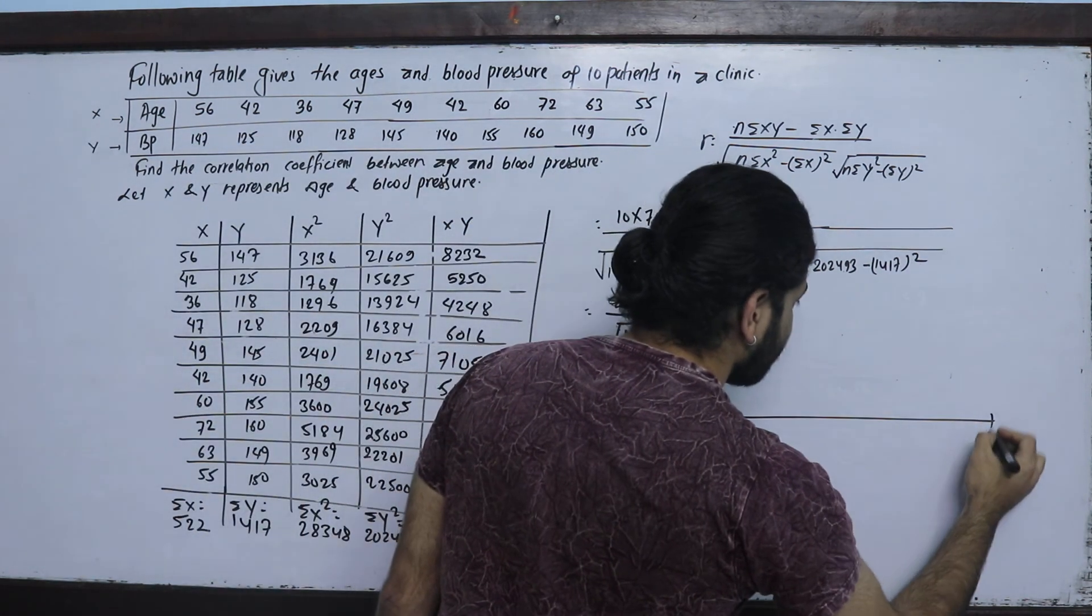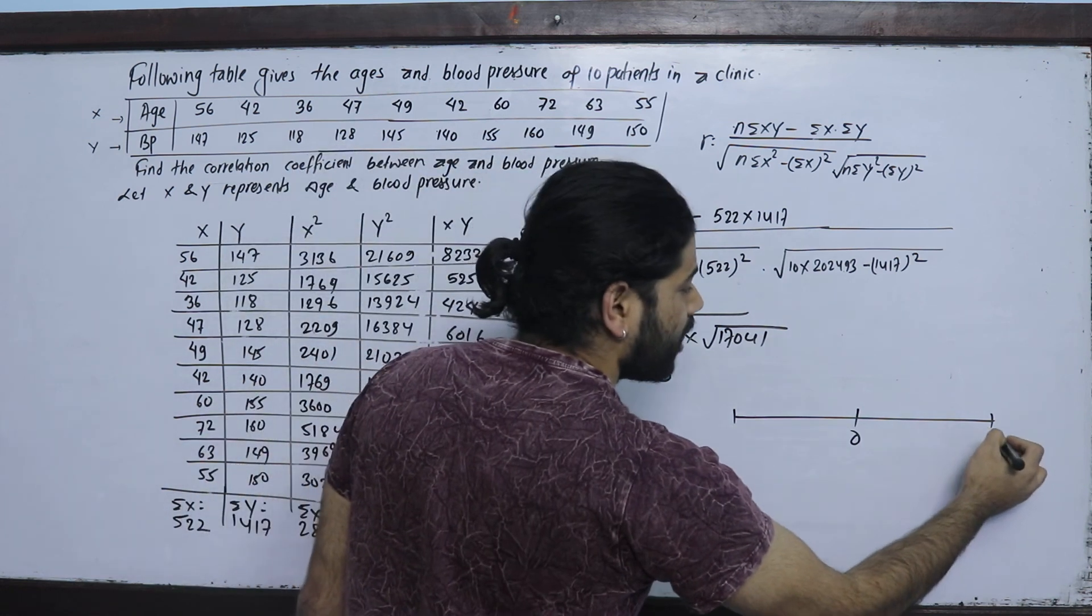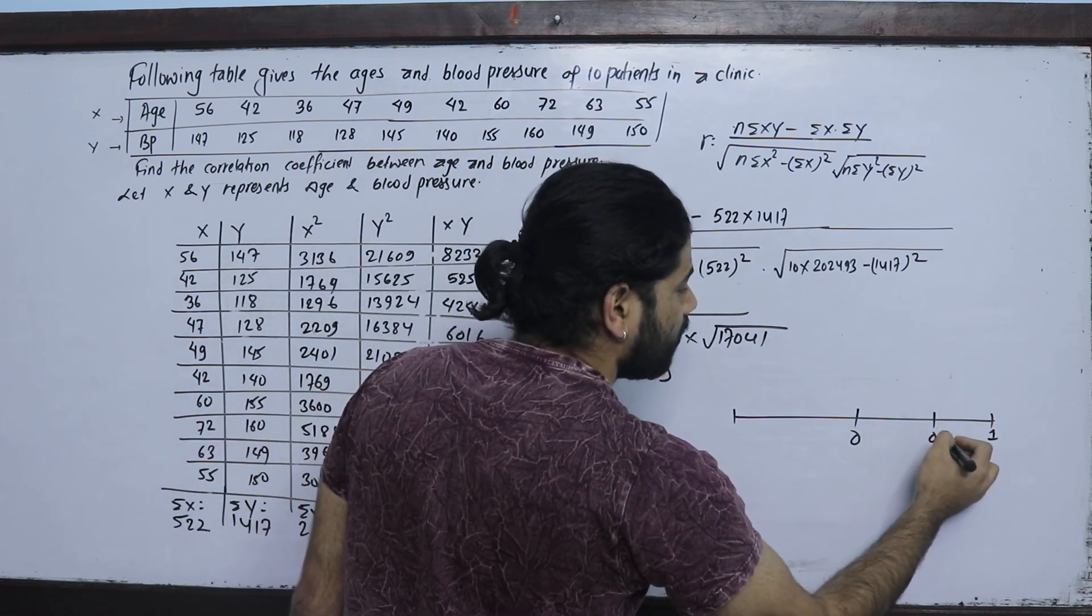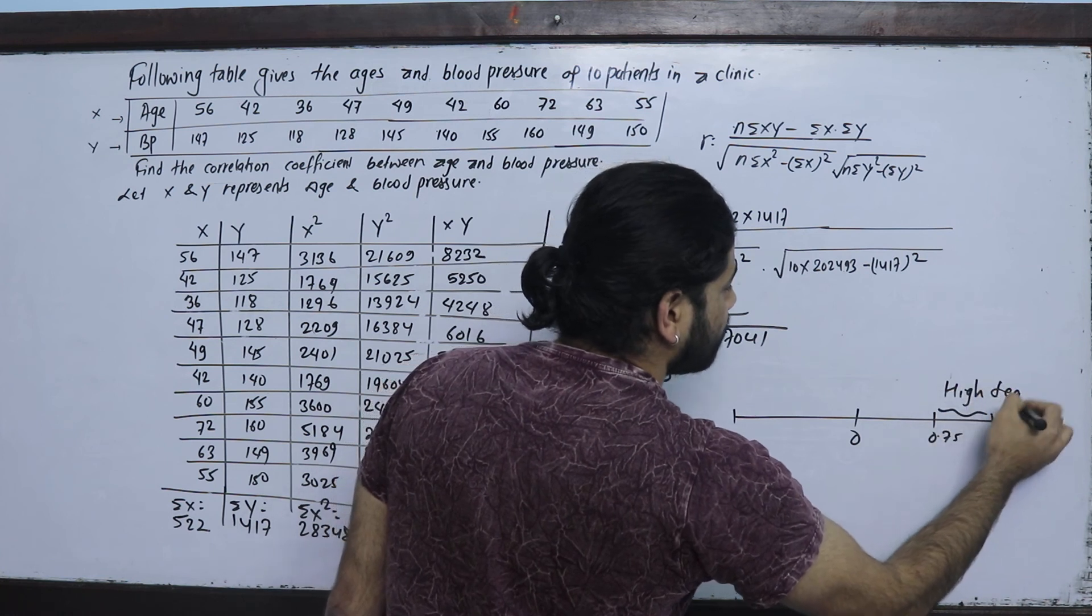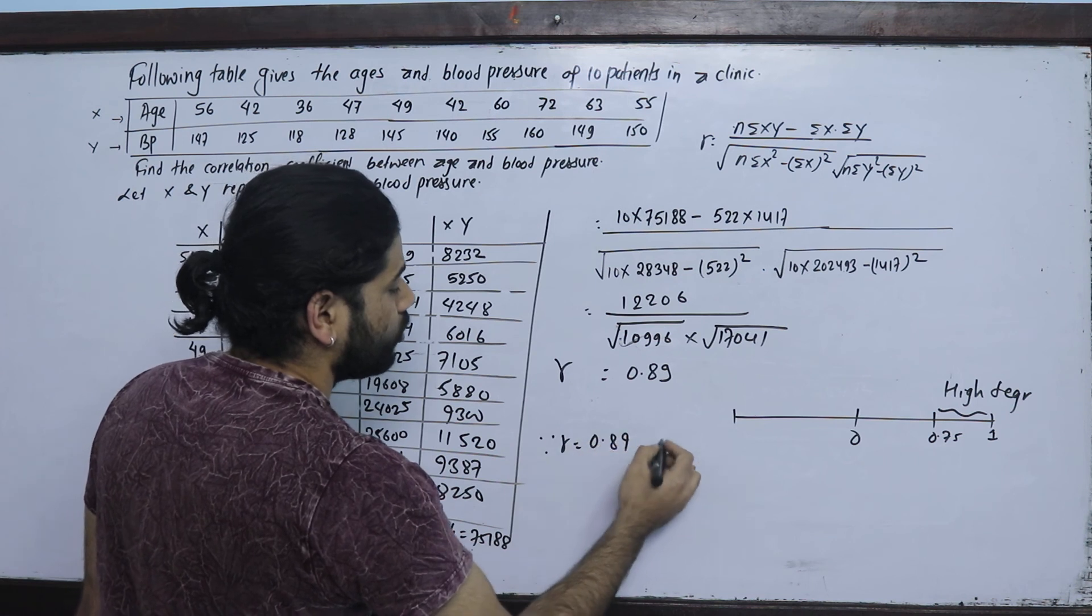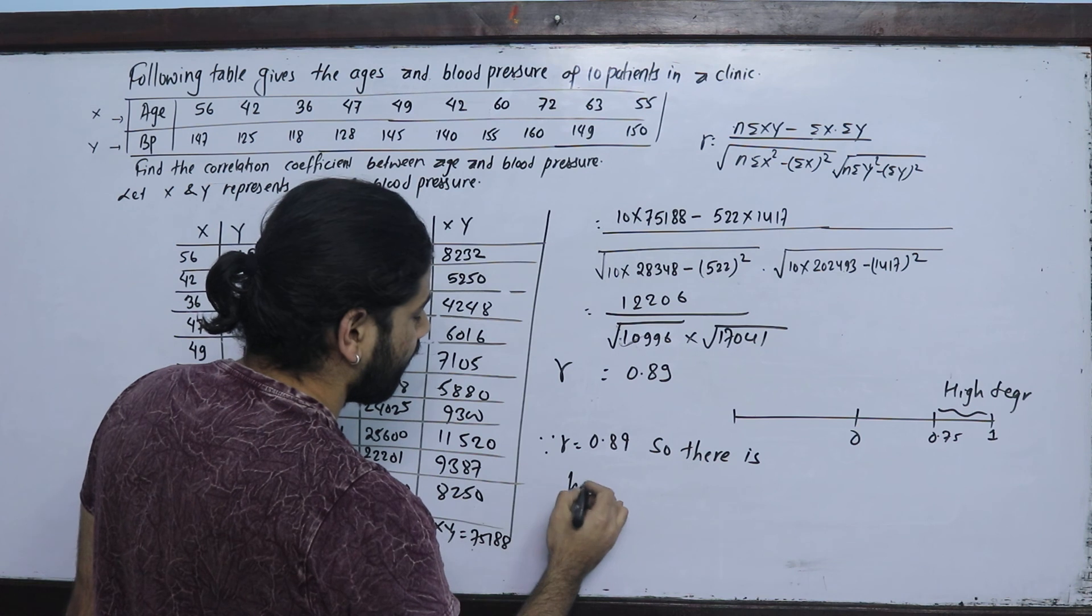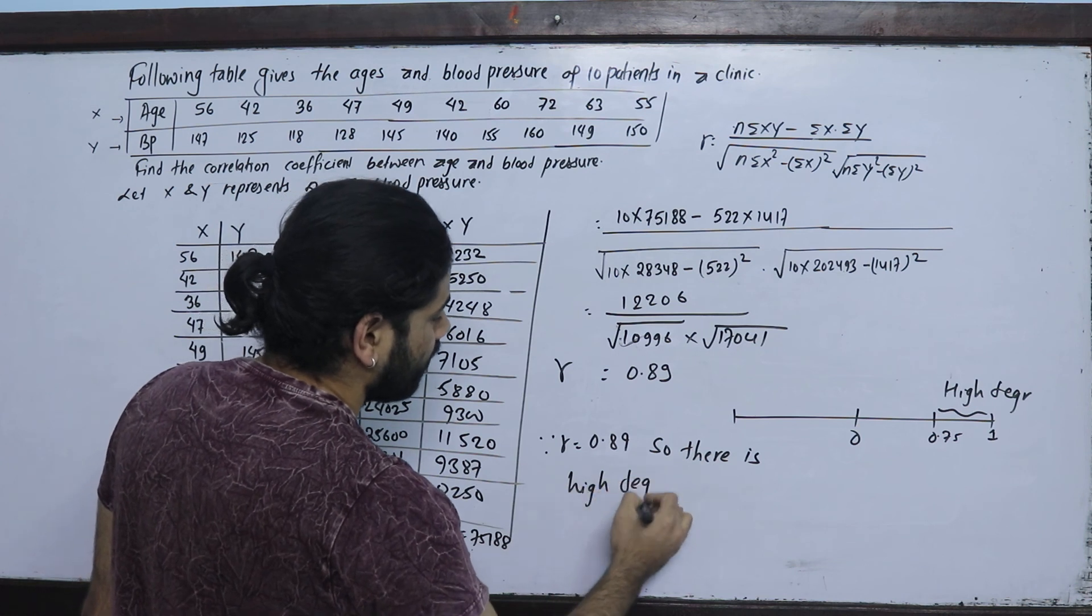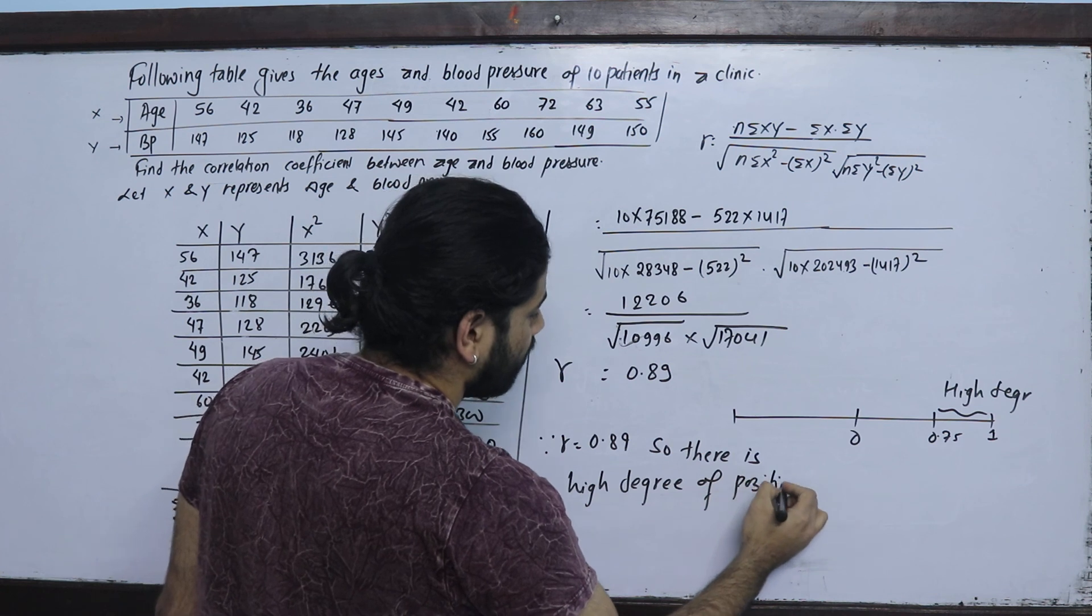Since r equals 0.89, which is positive, we have a positive correlation. In fact, there is a high degree of positive correlation between age and blood pressure.